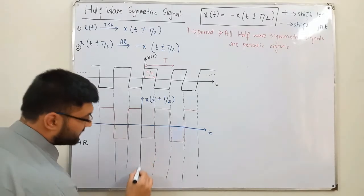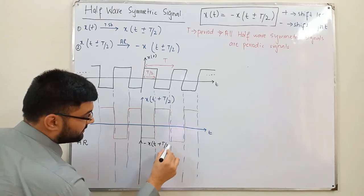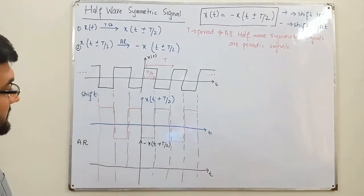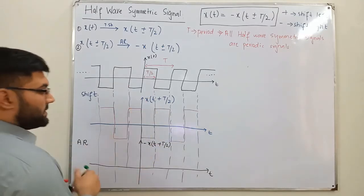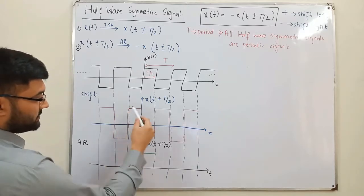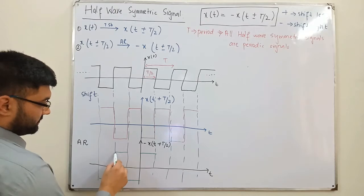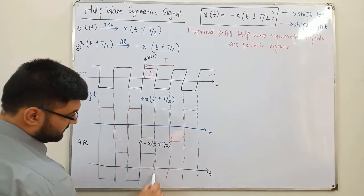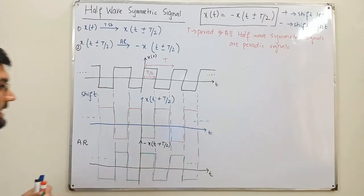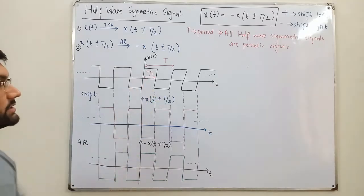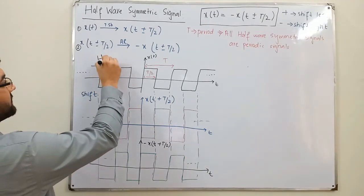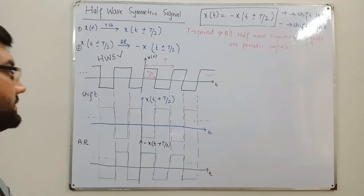Now for step two, we amplitude-reverse: negative x(t + T/2). The positive portions become negative and the negative portions become positive — the signal is flipped about the time axis. Comparing the shifted, amplitude-reversed signal to the original x(t), they are equal. Therefore, this square wave satisfies the condition and is a half-wave symmetric signal.